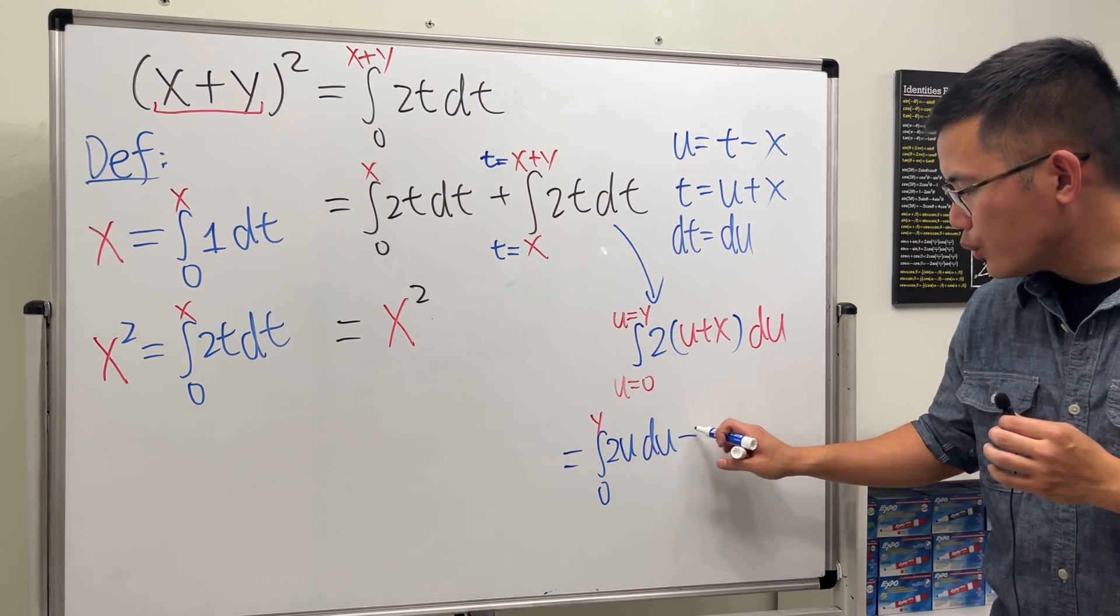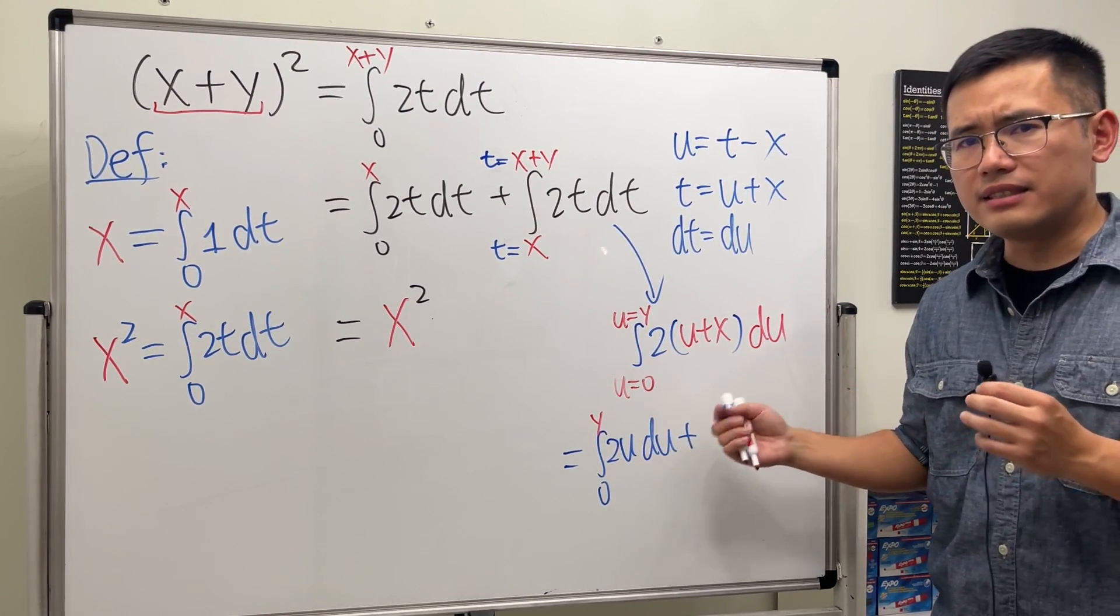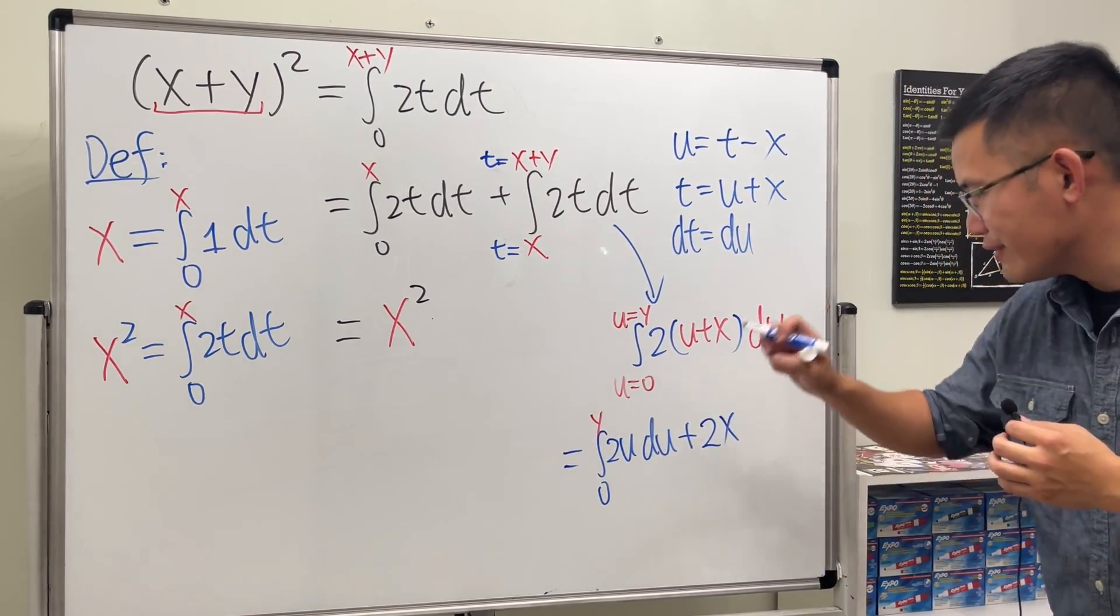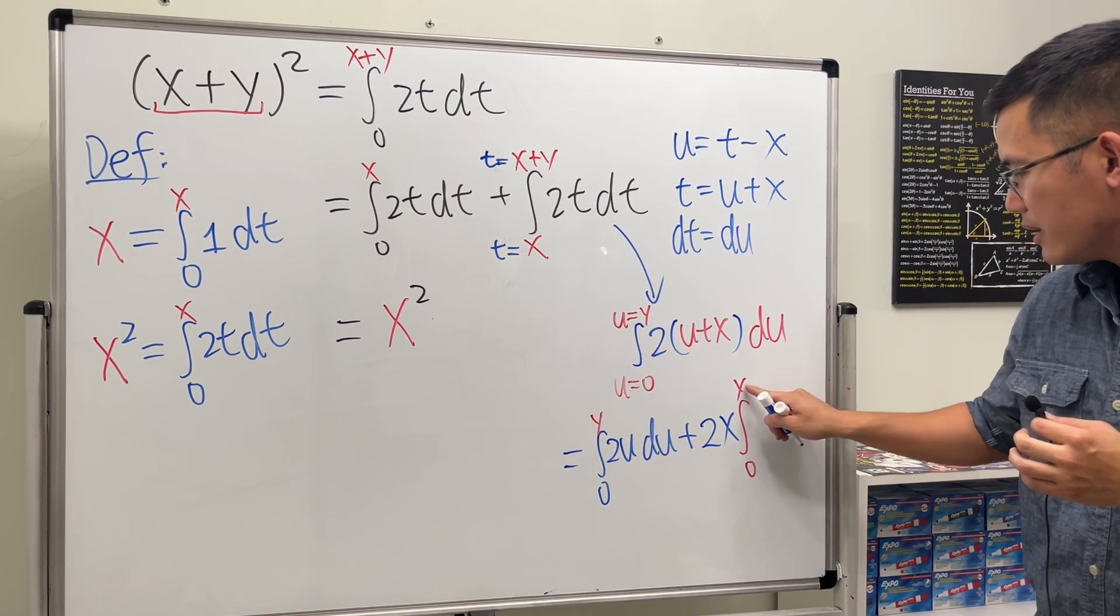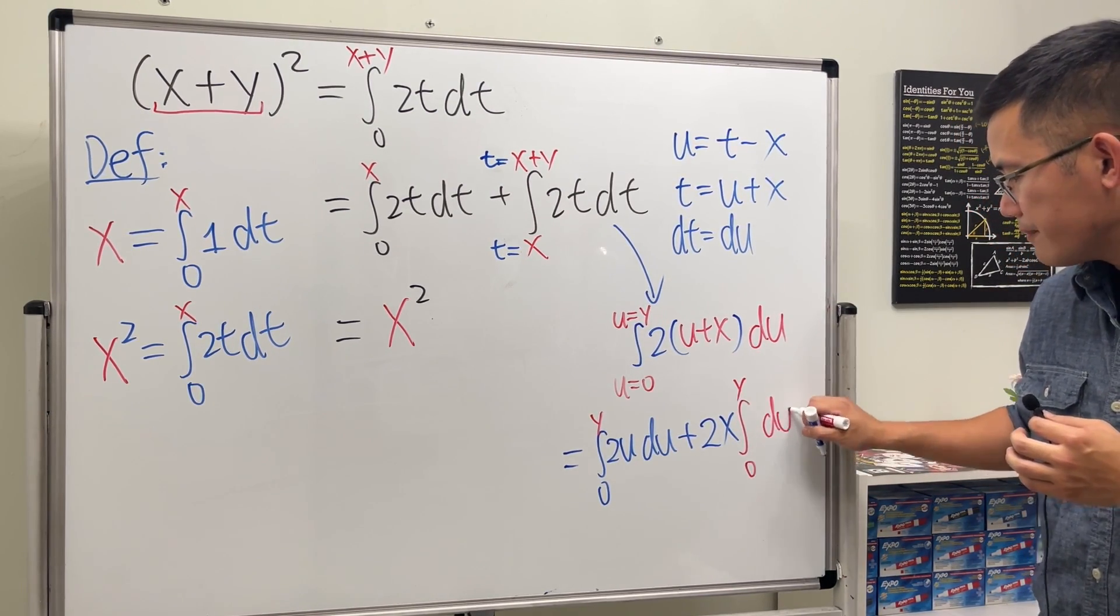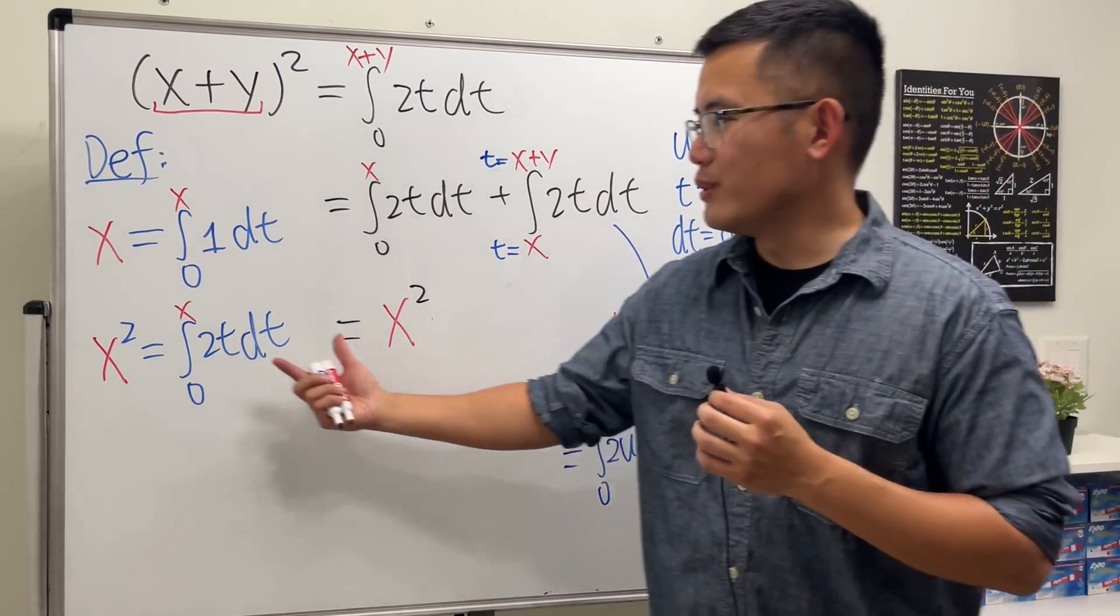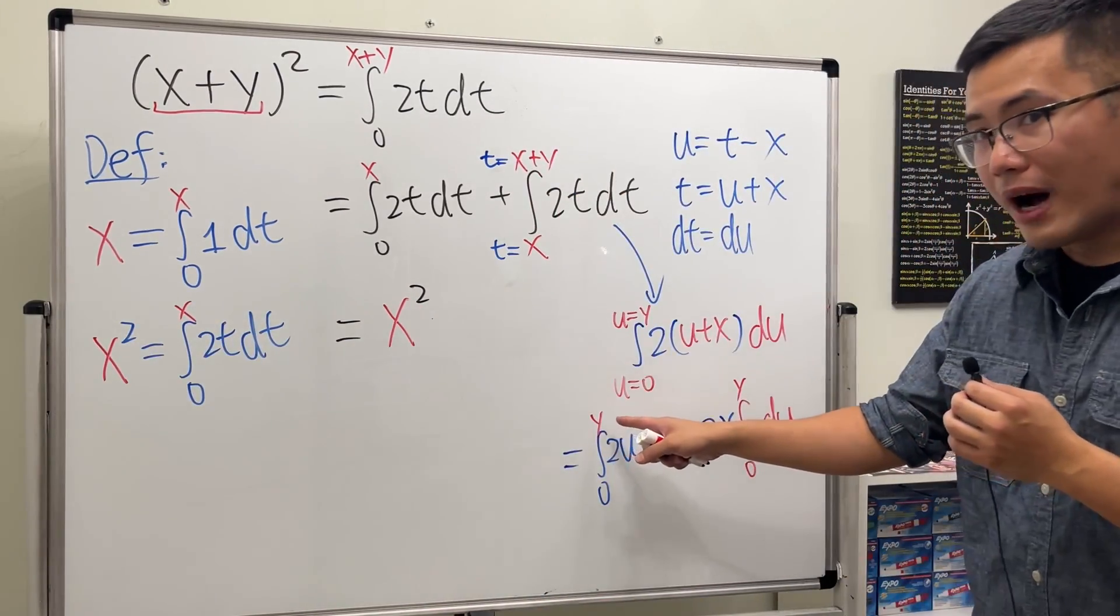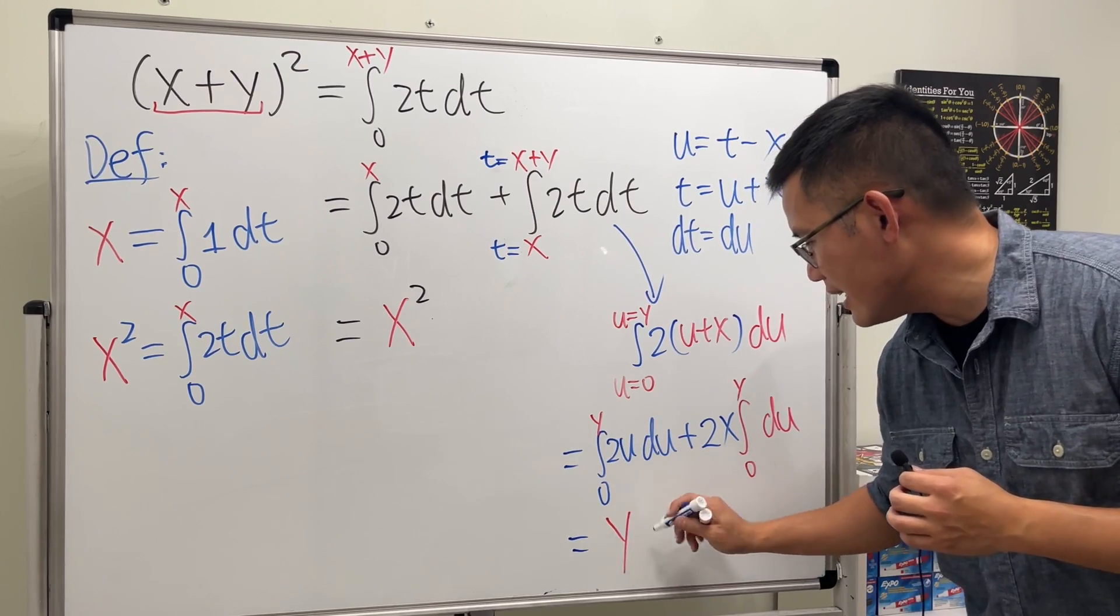And then we are going to add, okay, 2 times x, but they are both constants in the u world, so we can take it on the outside right here. And then look at the integral going from 0 to y, and then this right here is just going to be the du inside. Now what's this? Well, this right here is pretty much similar to this, right? Which is something square. And here we have the y square, then huh? So this part gives us y square.